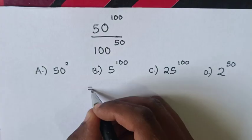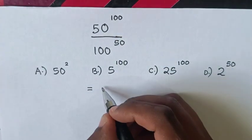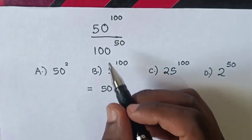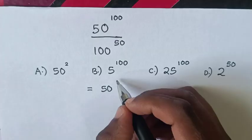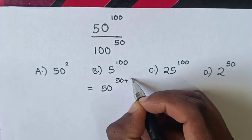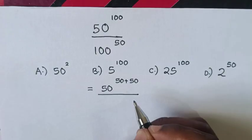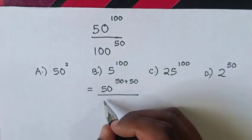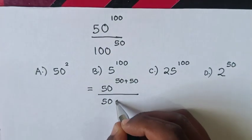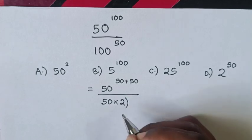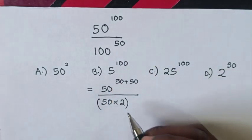This will be equal to 50^100, which is the same as 50^(50+50), over 100^50, which is the same as (50 times 2)^50.